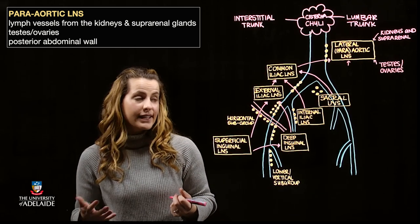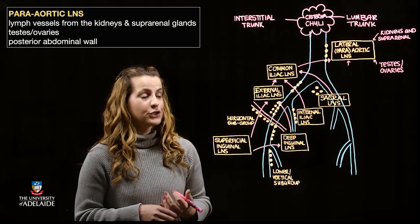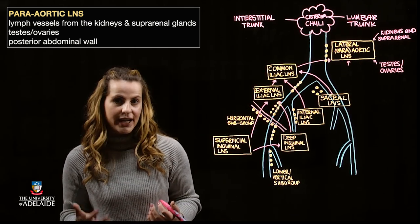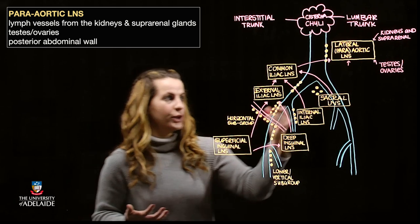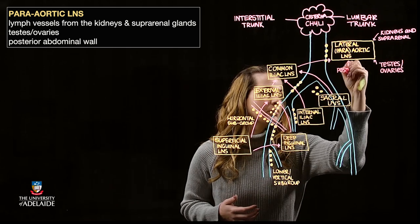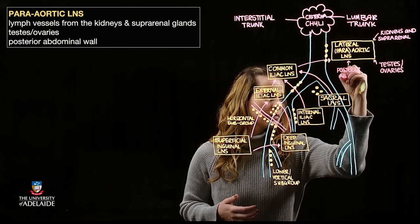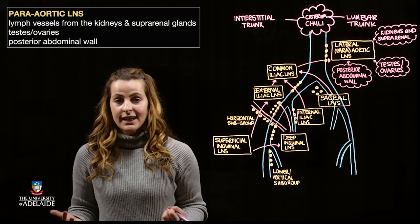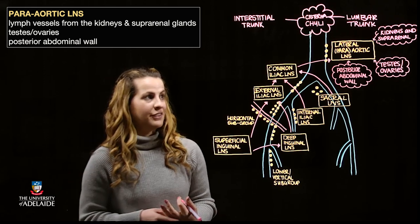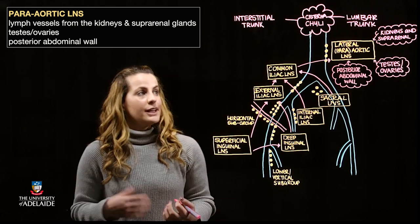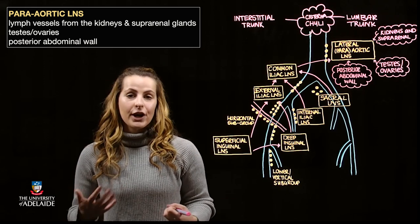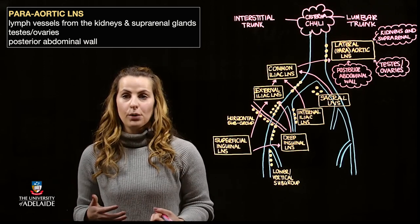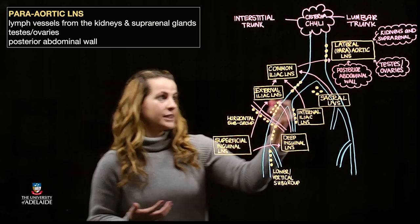Finally, the para-aortic lymph nodes also receive contributions from the posterior abdominal wall. As mentioned at the beginning of this video, lymph from the para-aortic lymph nodes will then form the lumbar trunk.